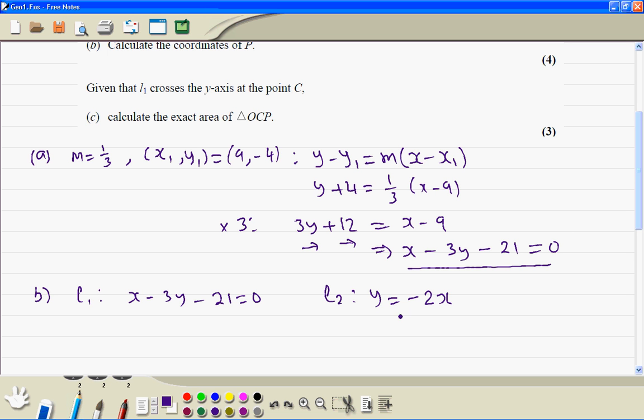Then we substitute for y minus 2x. So x minus 3 times minus 2x minus 21 equal to 0. So that's x plus 6x minus 21 equal to 0. So 7x is equal to 21, therefore x is equal to 3.